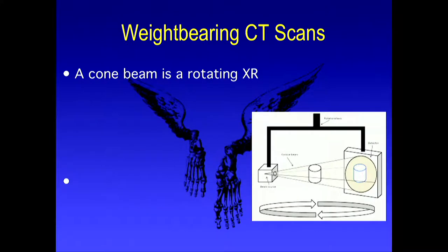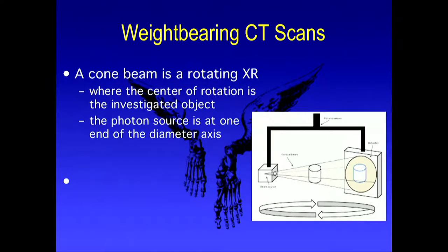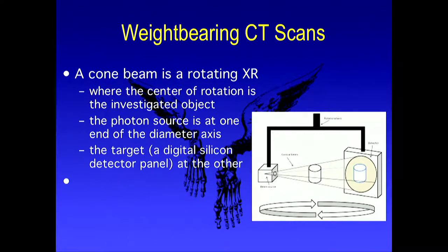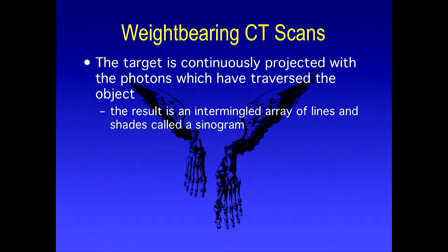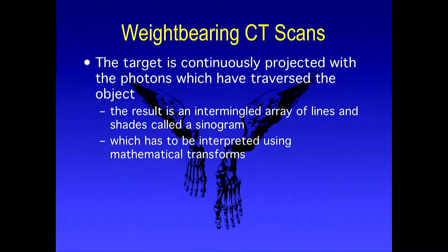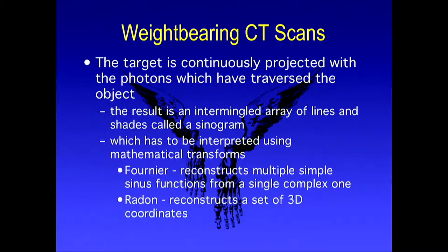How is it done? It uses a cone beam with a rotating x-ray. The center of rotation is the object being investigated; the photon source is at one end of the diameter of the axis, goes around the target at the other end. The target is continuously projected on the photons that have traversed the object, and the result is an array of lines called a sinogram. This is interpreted mathematically to produce a Fourier reconstruction — combining multiple simple sinusoidal functions into one complex one — called a Radon transform, which reconstructs the image into 3D coordinates.